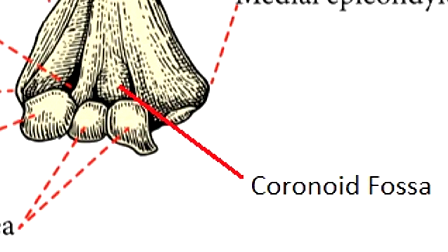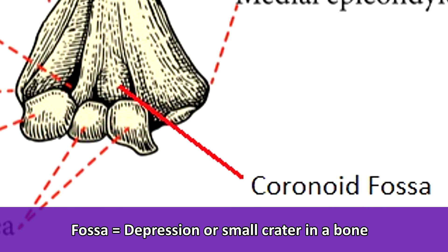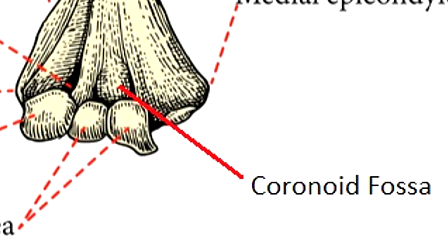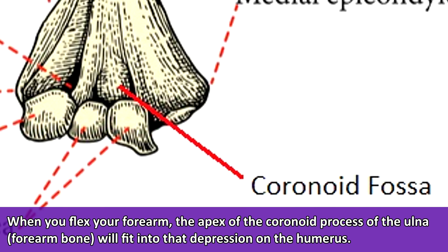Next, we have the coronoid fossa, which is near the middle of the humerus toward the distal end when viewed from the anterior side. Anytime you see the word fossa, it refers to a depression or small crater-like structure in the bone. Why is that depression there? Whenever you flex your forearm, the apex of the coronoid process — a bony prominence on the ulna of the forearm — fits into that depression of the humerus.